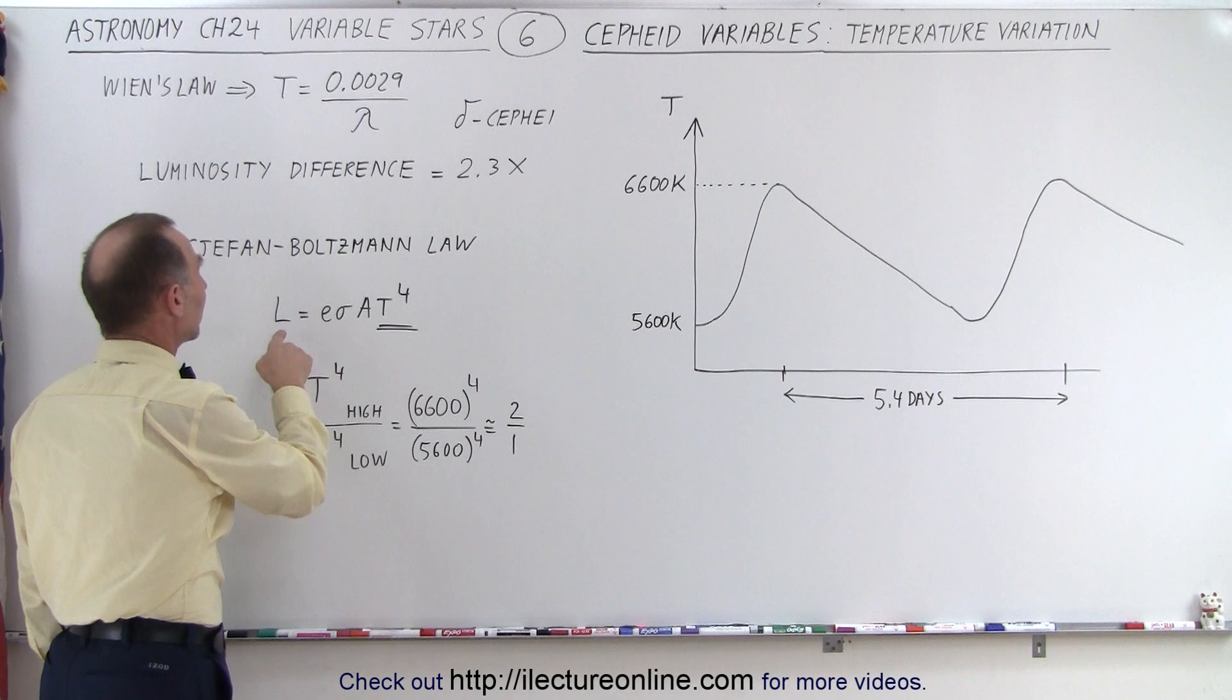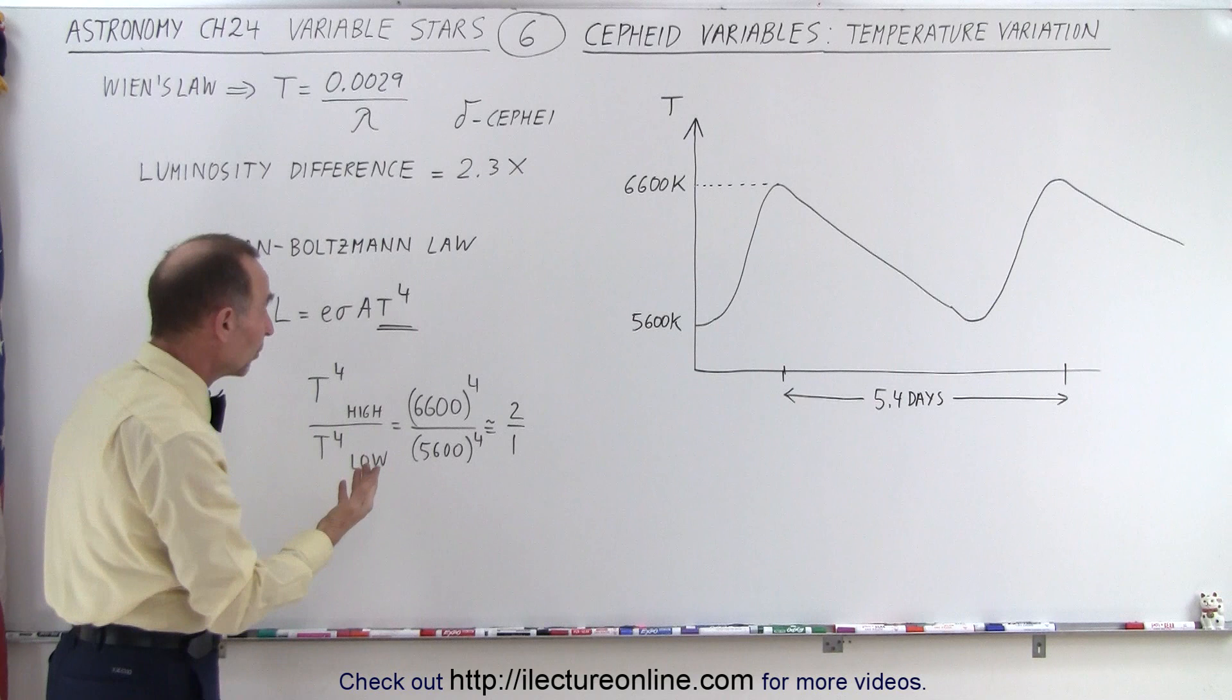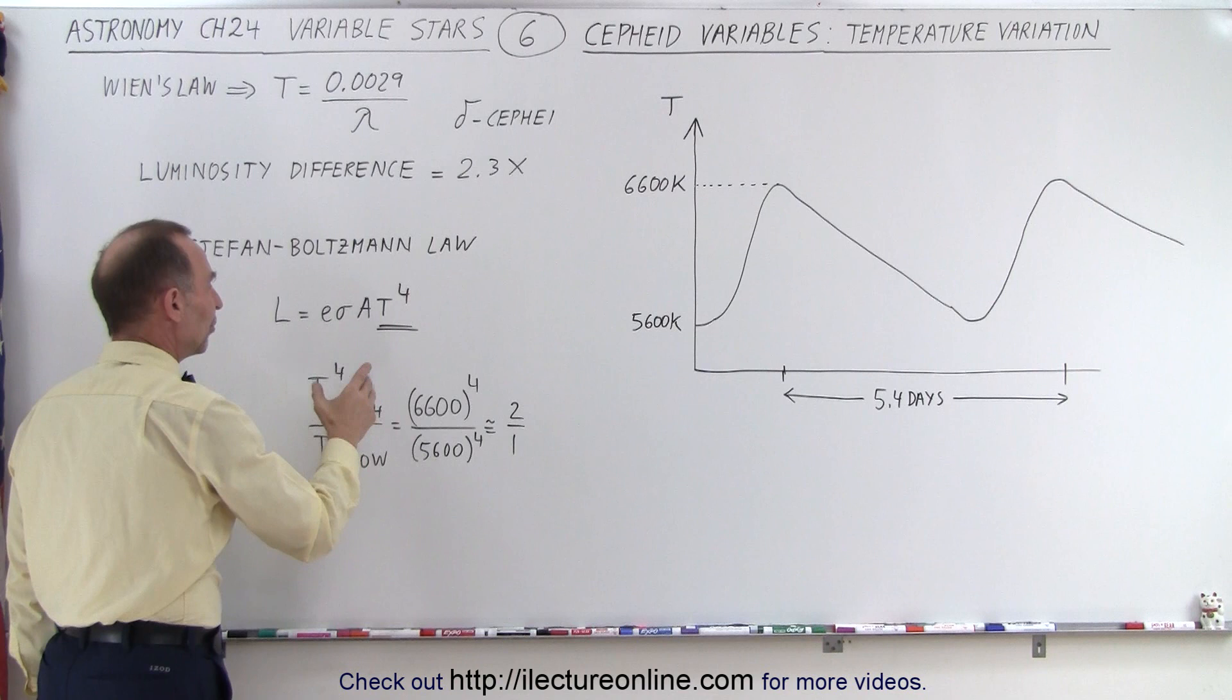So using the Stefan-Boltzmann law and realizing that the luminosity, or the amount of energy we get from the star, is equal to εσAT to the fourth power, ε is the emissivity, σ is the Boltzmann constant, A is the surface area of the star, and T is the temperature.